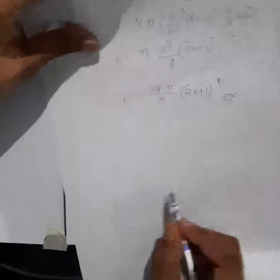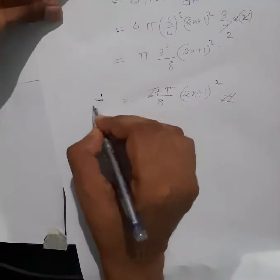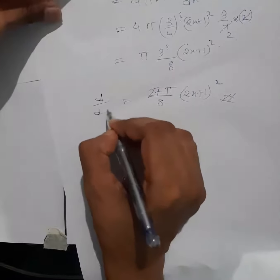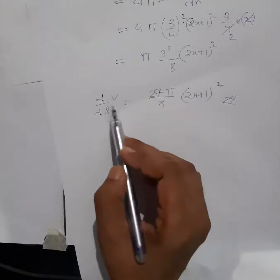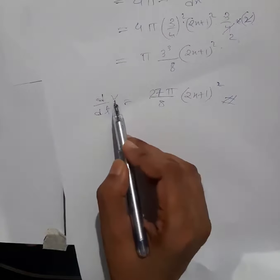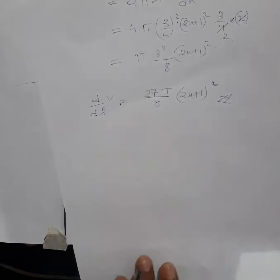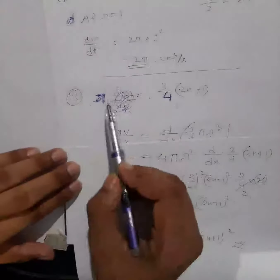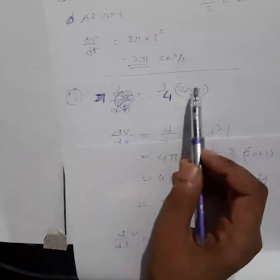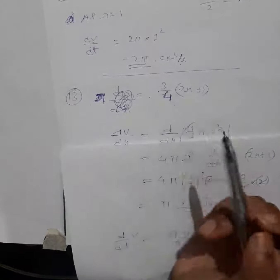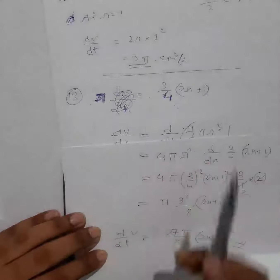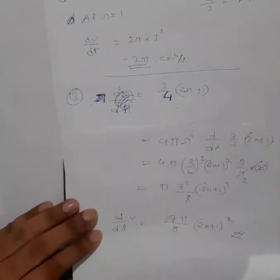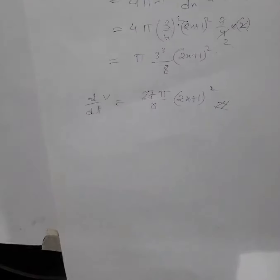So the answer is dV/dx = (27π/8)(2x+1)². In your write-up, please mention: let r be the radius and V be the volume, and state the formula clearly.